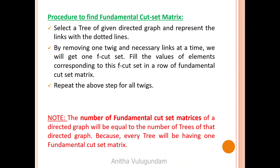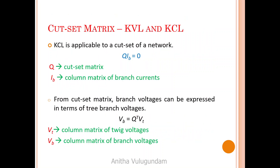Procedure: select a tree of the given directed graph and represent links with dotted lines. By removing one twig and necessary links at a time, we get one F cut set. Fill the values of elements corresponding to that F cut set row, and repeat for all twigs. The number of fundamental cut set matrices equals the number of trees. KCL is applicable to a cut set of a network.